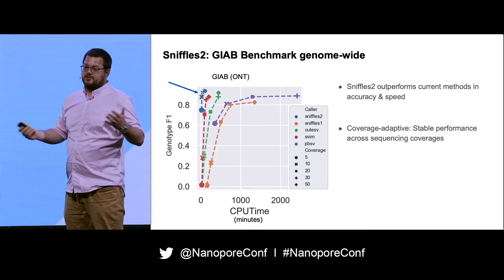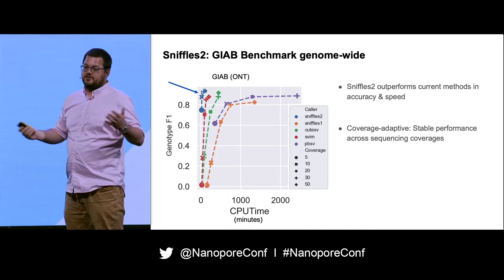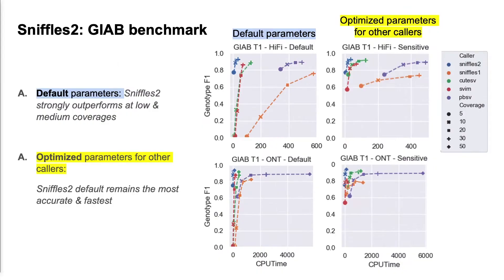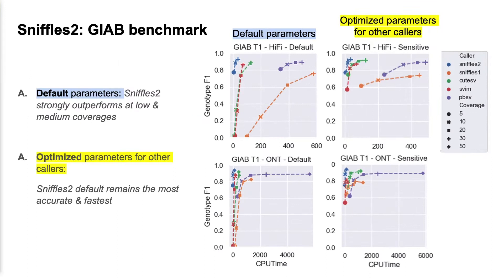Because of this automatization you might ask how it performs against other tools that we optimized in terms of parameters. On the top you see PacBio HiFi datasets, on the bottom Oxford Nanopore datasets - on the left with default recommended parameters, on the right with improved parameters on the other tools. The result remains basically the same: Sniffles 2 is performing faster and more accurately than the other tools.